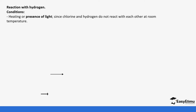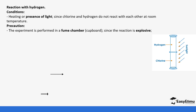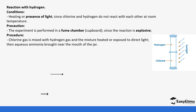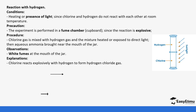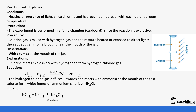Chlorine also reacts with hydrogen in the presence of light. The reaction is done in a fume chamber because it is very explosive. When chlorine gas is mixed with hydrogen and the mixture is exposed to direct light, the hydrogen chloride gas produced rises upward. Holding a jar of aqueous ammonia near the mouth of the vessel produces white fumes of ammonium chloride, confirming that hydrochloric acid gas is being formed.